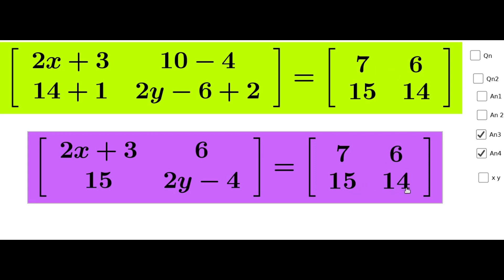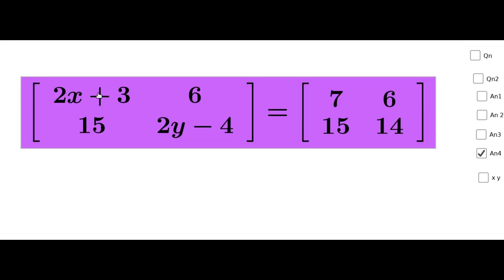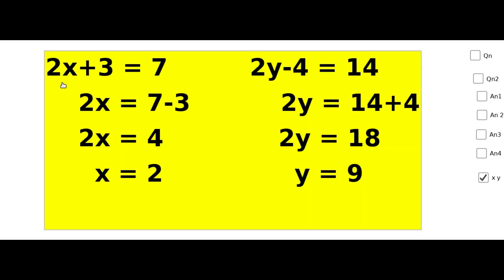Then we equate the corresponding terms using the equality of matrices. We get: 2x+3 = 7, 6 = 6, 15 = 15, and 2y-4 = 14. From 2x+3 = 7, taking 3 to the right side: 2x = 7-3 = 4, therefore x = 2.